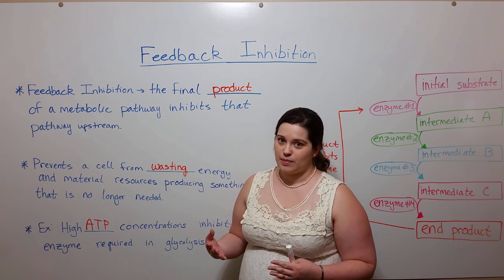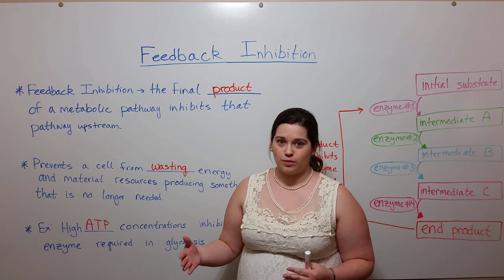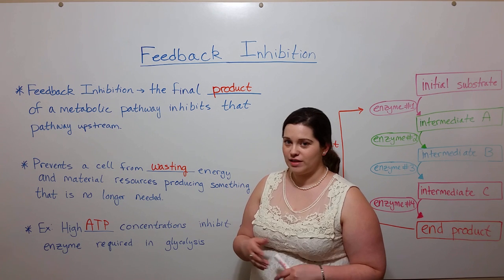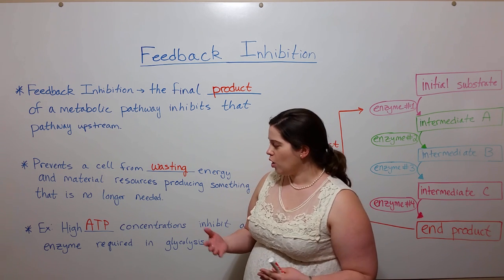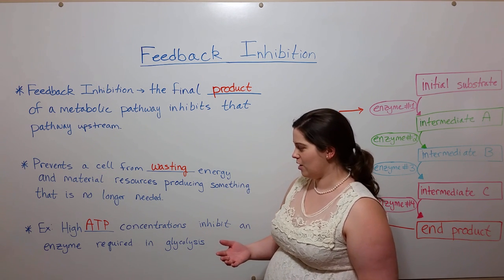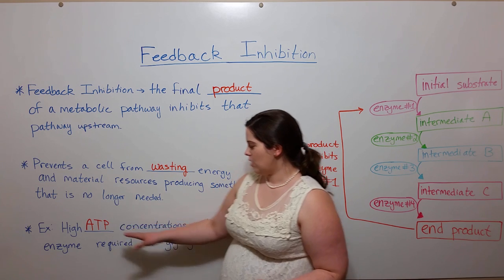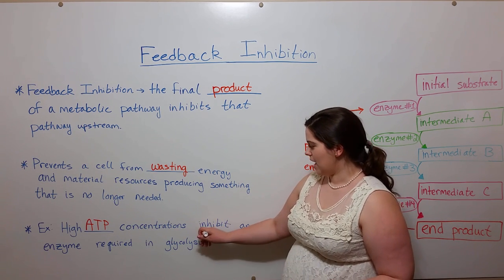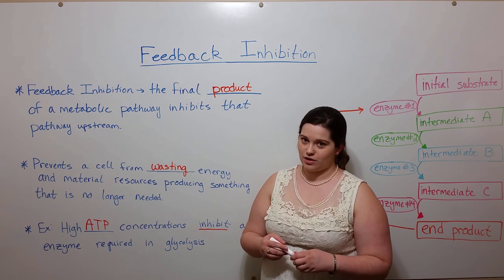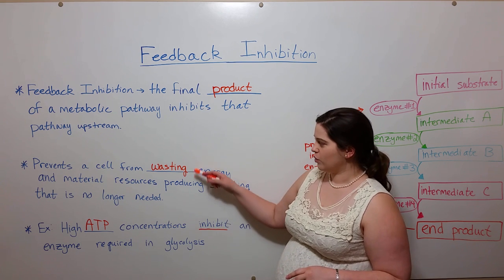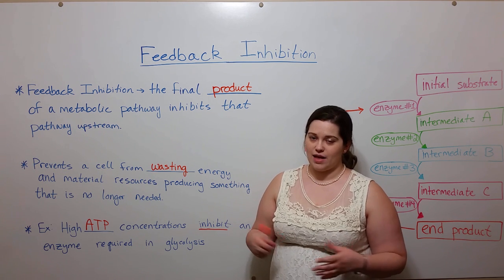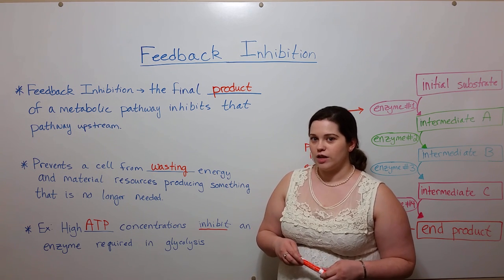When the cell needs ATP, it wants cellular respiration to run and produce what it needs. However, when the cell no longer needs ATP, or when the ATP being produced reaches too high a concentration in the cell, that ATP will actually inhibit an enzyme required in the first stages of cellular respiration — again, preventing the cell from wasting energy and material resources running that complex cellular respiration process.